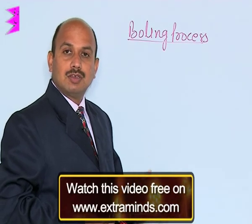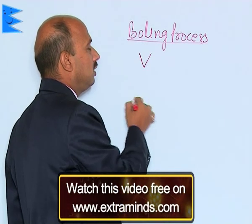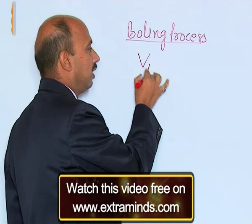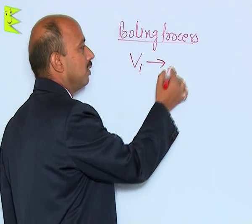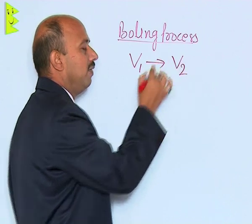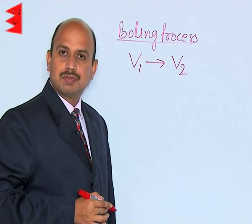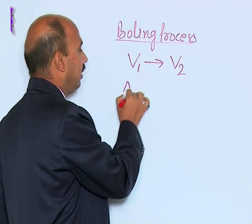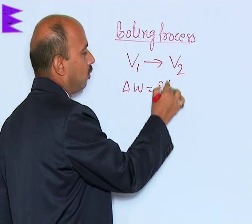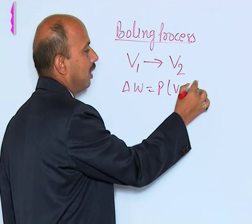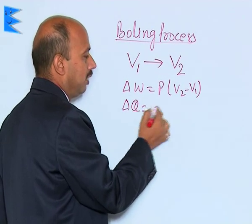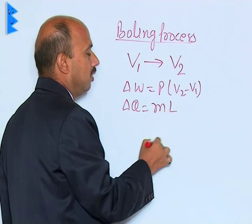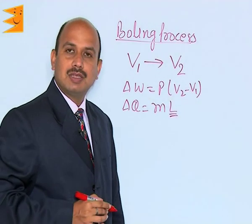In this case, the volume of the liquid changes. Suppose the initial volume of the liquid at constant temperature and pressure is V1. When it is heated and changes into vapors, its volume becomes V2 at constant pressure. Now, the work done can be written as P into V2 minus V1. The heat supplied can be written as M into L, where L is the latent heat of vaporization.